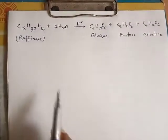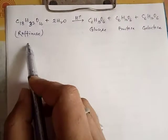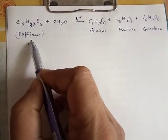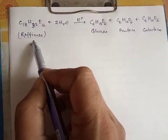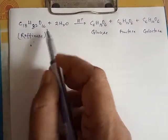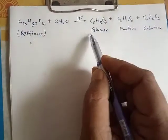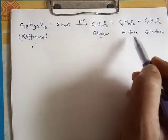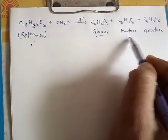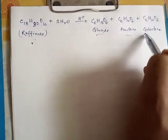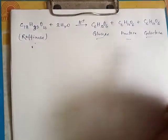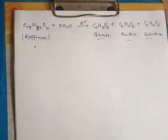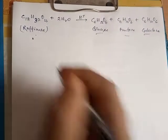For example, raffinose is a trisaccharide which upon hydrolysis yields 1 molecule of glucose, 1 molecule of fructose, and 1 molecule of galactose.